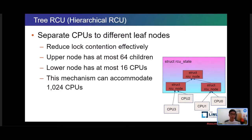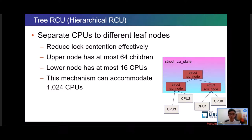Tree RCU is one of the current RCU implementations in the Linux kernel. It changes the original architecture to a hierarchical tree structure, which brings some benefits. The most significant improvement is reducing lock contention, since it separates CPUs into a two-level tree structure. It can accommodate 1,024 CPUs. If there are more than 1,024 CPUs, it will become a three-level tree automatically.